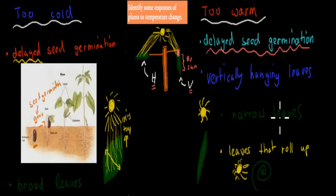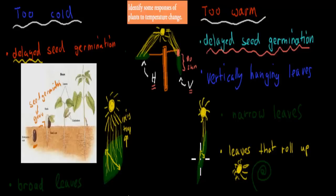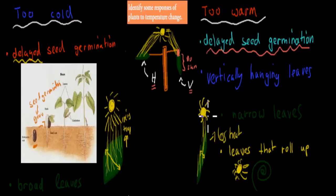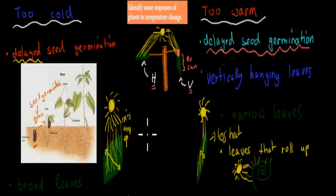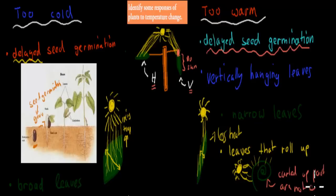Narrow leaves are also an adaptation to heat. Compared to broad leaves, narrow leaves have less surface area exposed to the sun, so less heat is produced — good when it's already warm enough. These are common adaptations for Australian plants. Leaves that curl up, like those of the spinifex plant, hide the inner surfaces from the sun; only the outer parts are exposed, reducing total heat absorption.